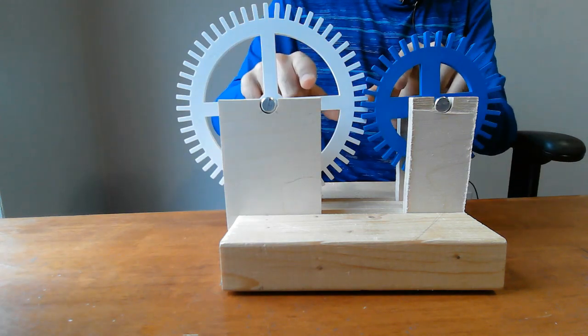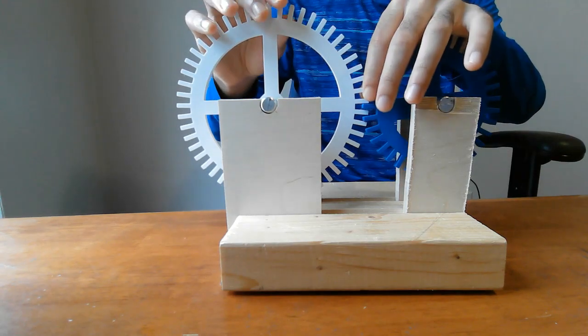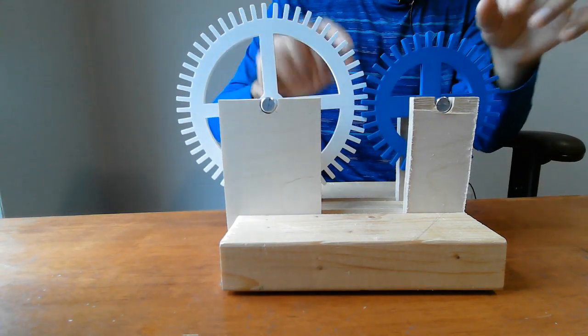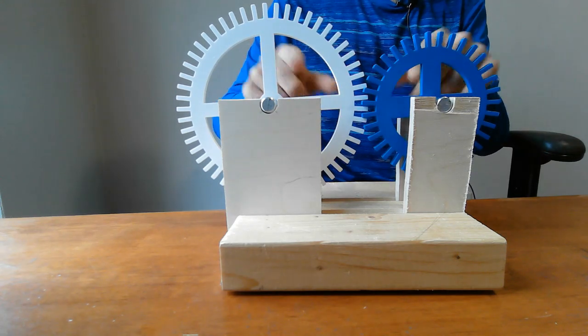So these two are roughly horizontal, these two slats right here that you can see. Let's watch what happens as I spin these gears. Let's see which of these slats reaches vertical position first.